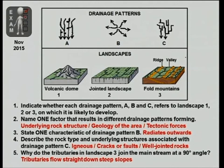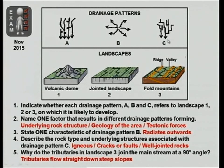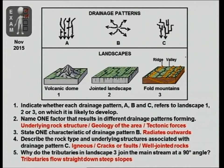The third question asked you to state one characteristic of the drainage pattern at B — the most important characteristic is that it radiates outwards. Number four asked you to describe the rock type and underlying structures associated with drainage pattern C — it would be igneous rocks with cracks or faults, well-jointed rocks. The last question asked why the tributaries in landscape three join the stream at a 90-degree angle — these are very short tributaries that flow straight down steep slopes.